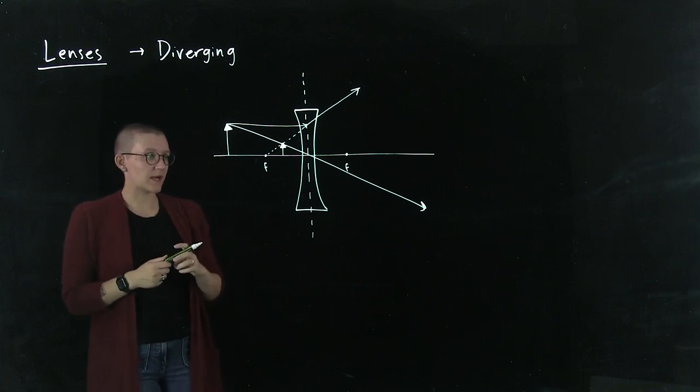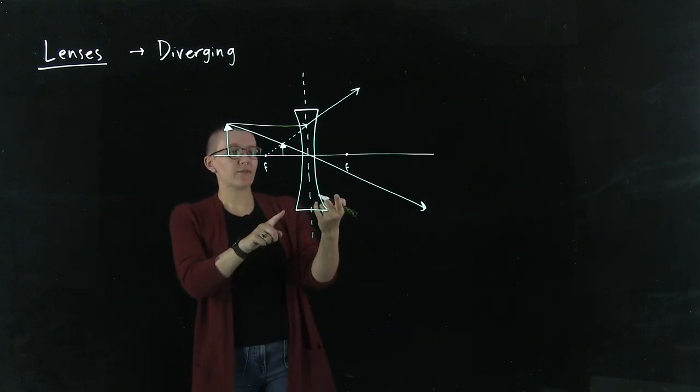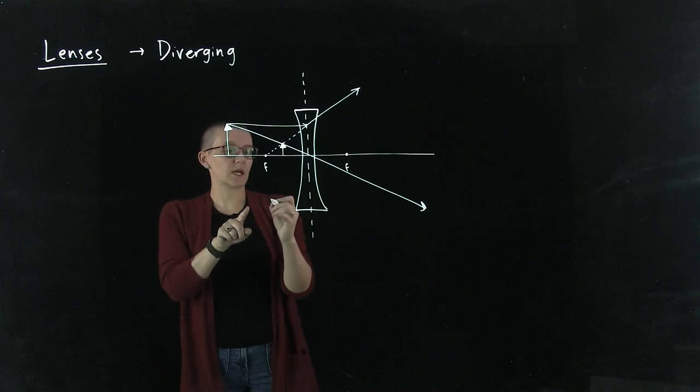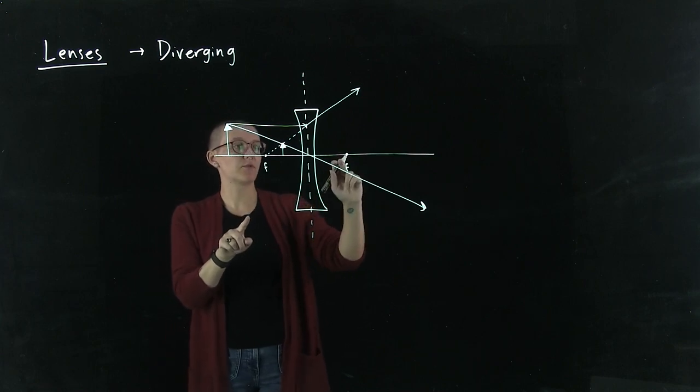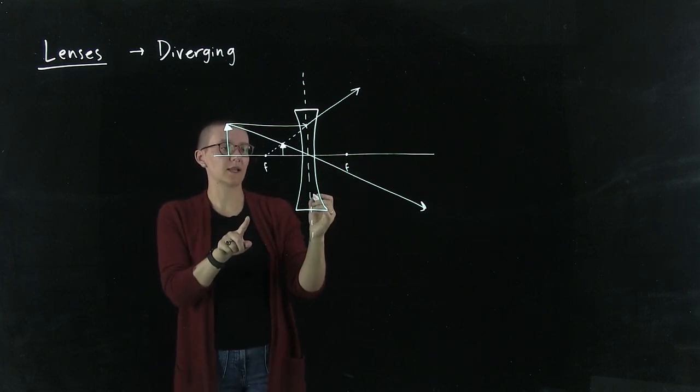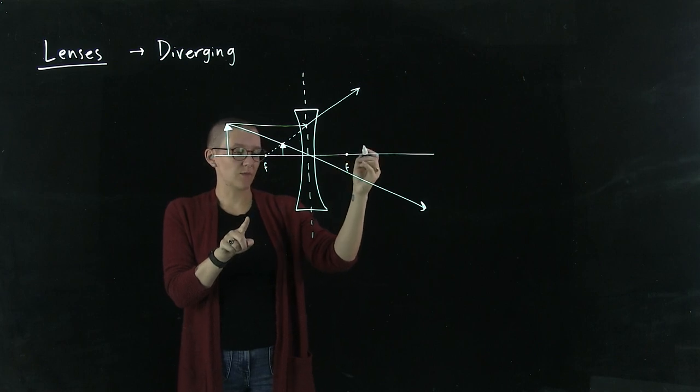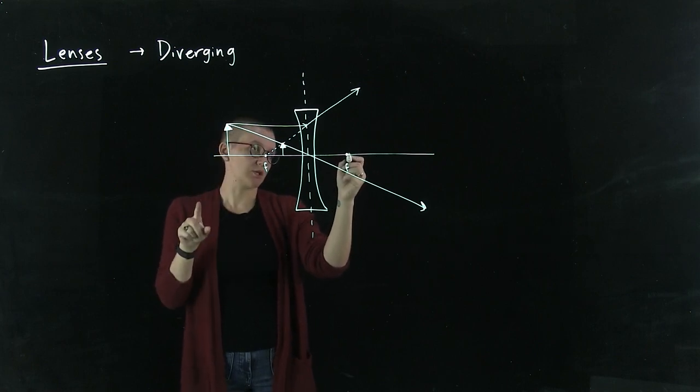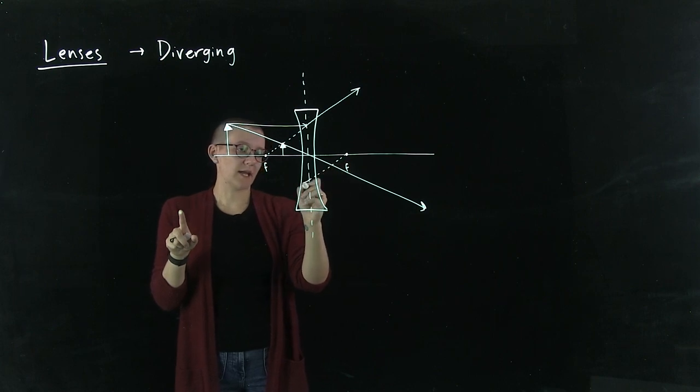But there is another ray we can draw where we send a light ray through the focal point on the opposite side of the lens. In this case, I'm just going to start with the focal point. We can draw this ray here.